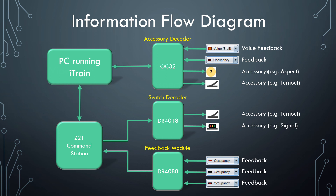But instead of generating 8-bit numbers, the aspect can only receive 8-bit numbers. So the flow of information is always in the other direction — from iTrain and out to the aspect. And unlike the value 8-bit feedback, which currently is rarely used, the aspect is a very useful and commonly used item in iTrain, especially within Actions.